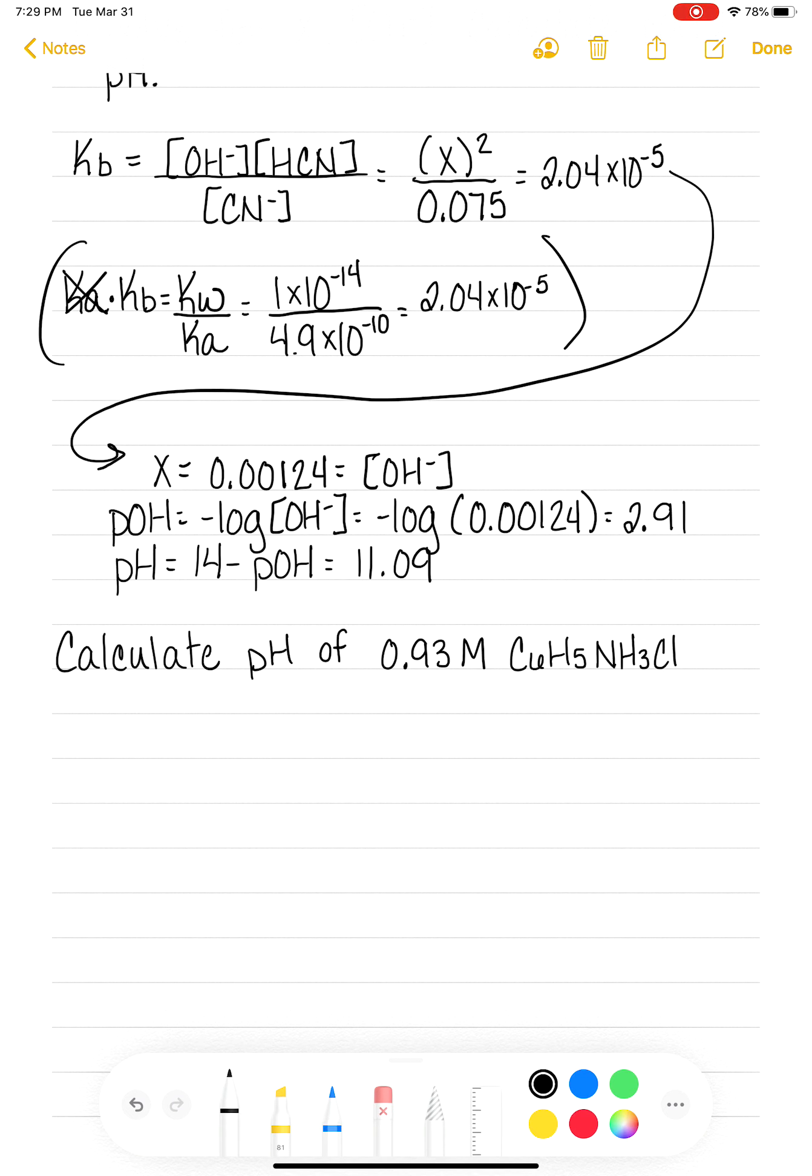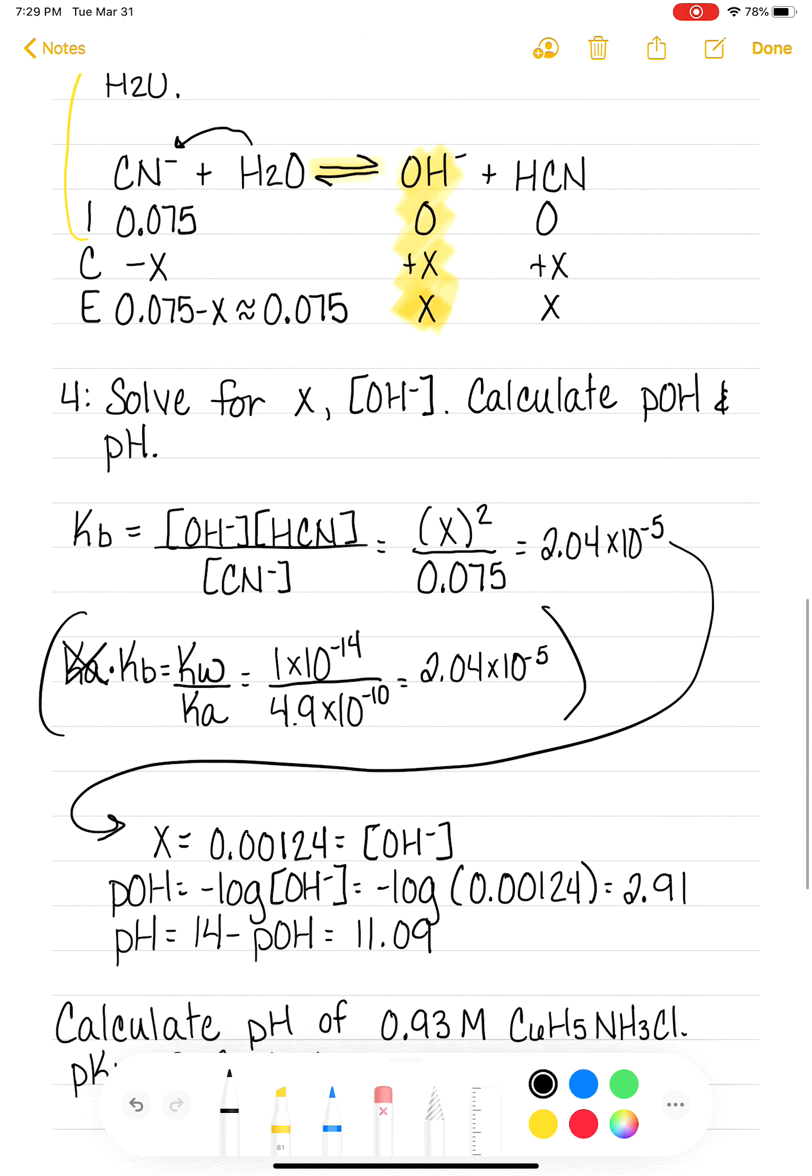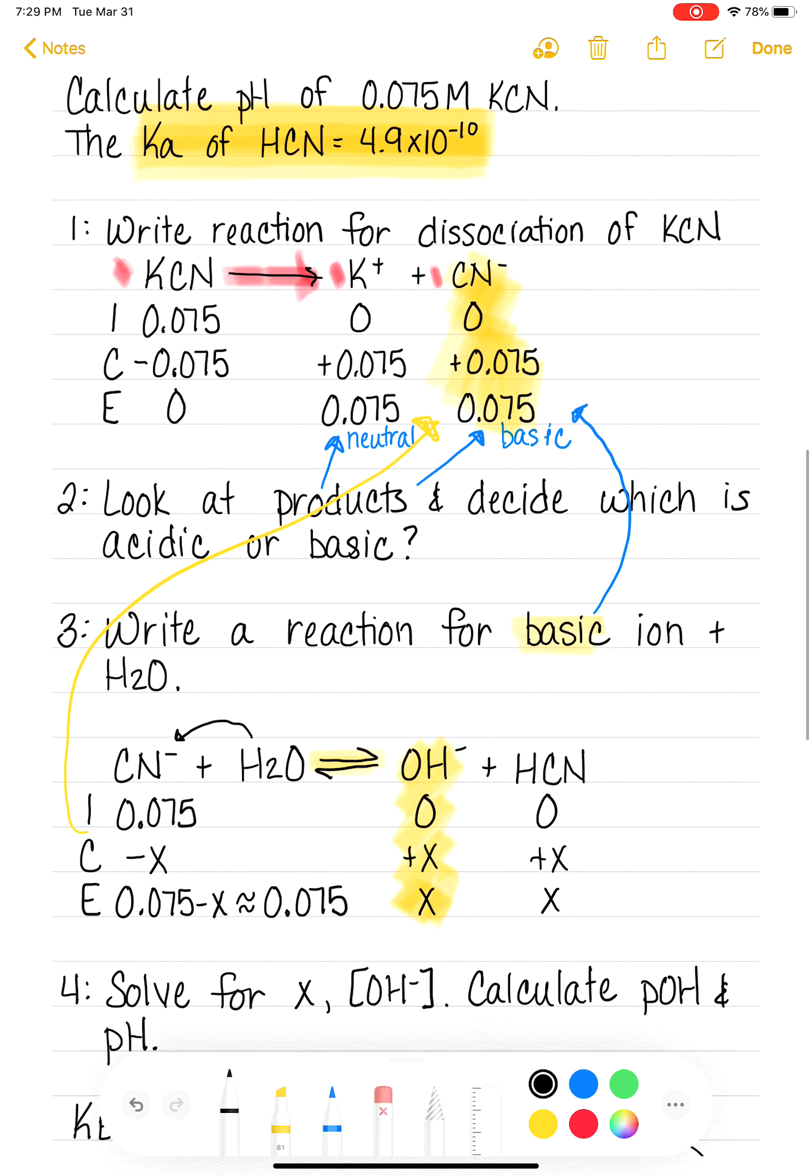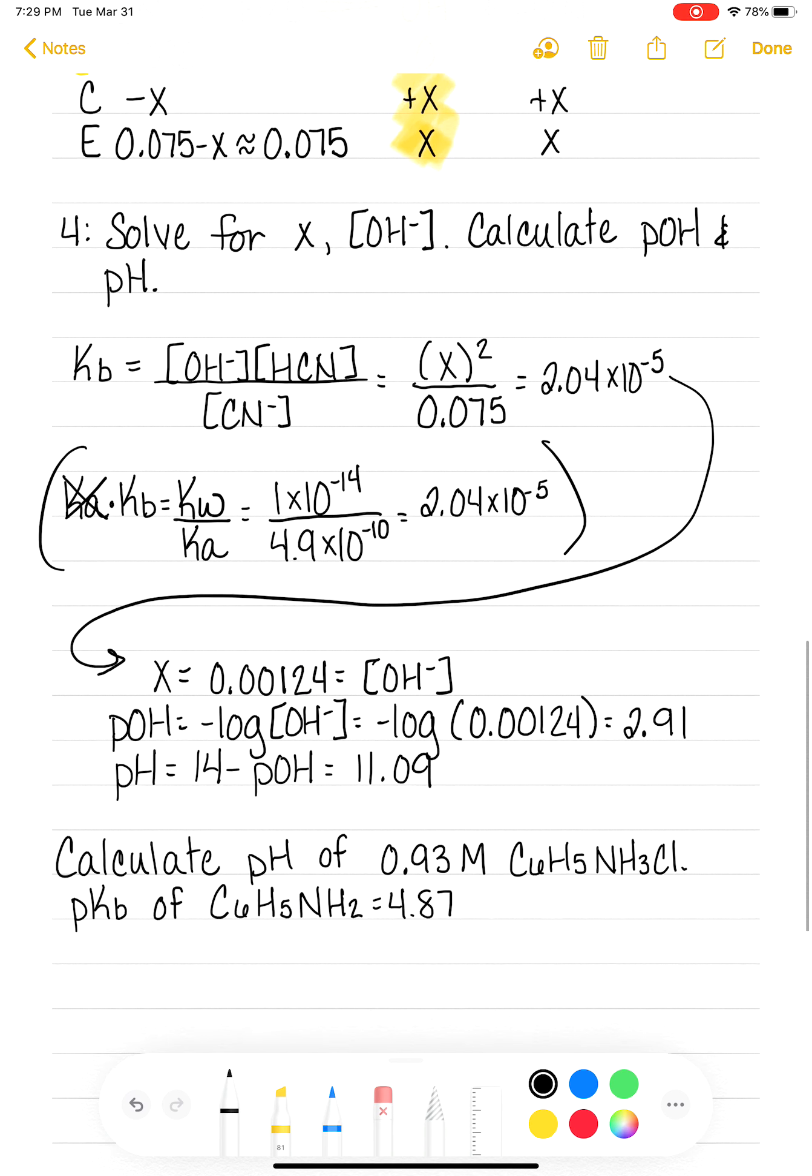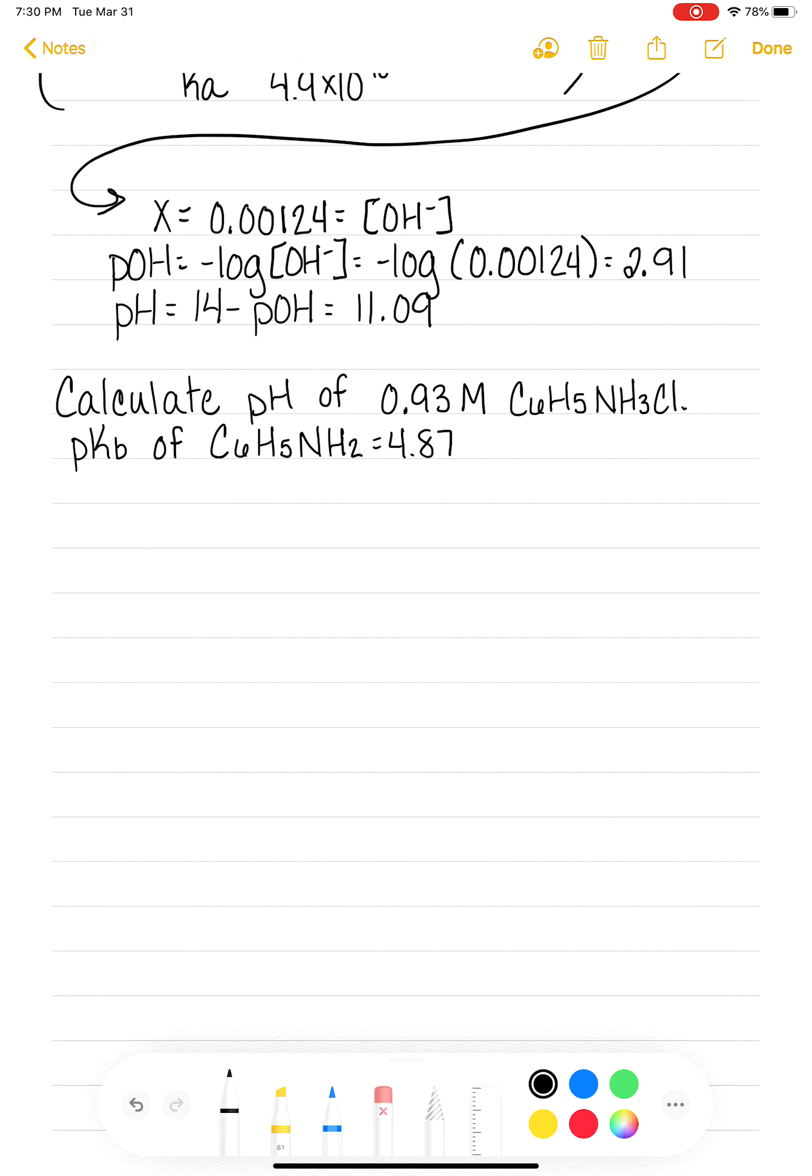The pKB, which is a new symbol for us, pKB of C6H5NH2 is 4.87. So this one is pretty tricky. Alright, so let's go back up and remember our steps one at a time. Step one, we're going to write a reaction for the dissociation of this complicated ionic compound.